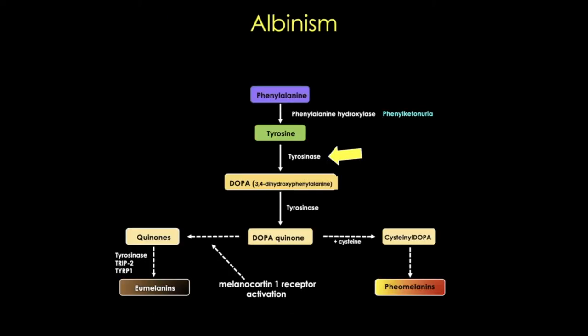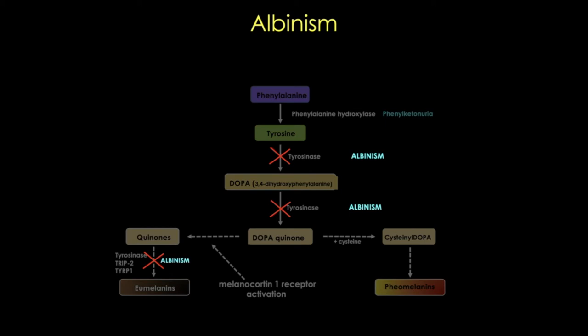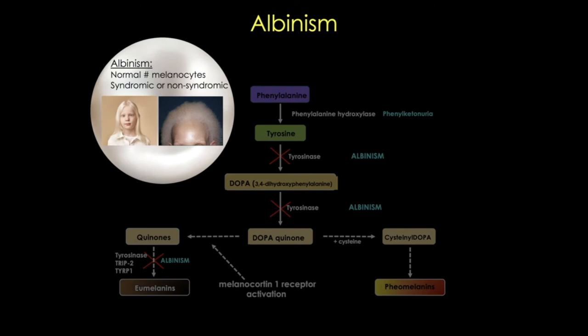The enzyme tyrosinase converts tyrosine to dihydroxyphenylalanine, or DOPA—the rate-limiting step in melanin biosynthesis. Importantly, the lack of this enzyme's activity results in albinism, which involves dilution of the color of the hair, skin, and eyes. With a complete lack of tyrosinase activity, the eyes are blue-gray with reduced visual acuity, and the hair is white at birth, sometimes turning yellow over time.